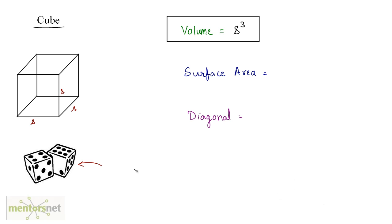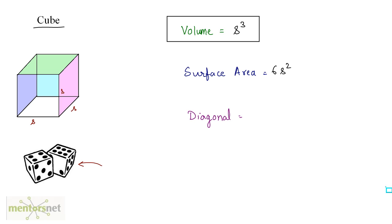Let us move on to surface area. A cube has 6 surfaces, and the area of each surface is s squared because each surface is a square. So the surface area will be 6 times the area of each surface, that is 6 times s squared. The surface area of a cube is 6s², where s is the side of the cube.